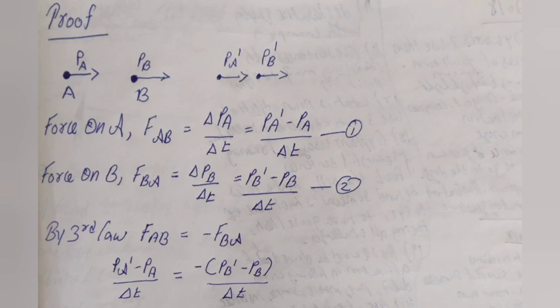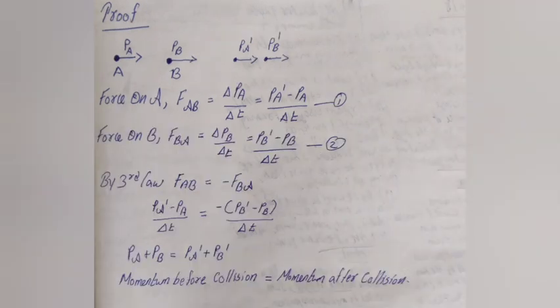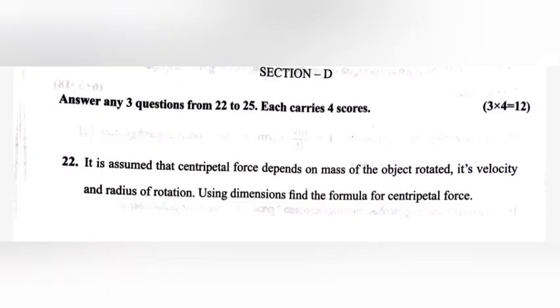Substituting: (pA1 - pA) / Δt = -(pB1 - pB) / Δt, which gives pA + pB = pA1 + pB1. Therefore, momentum before collision equals momentum after collision.